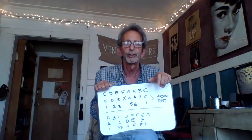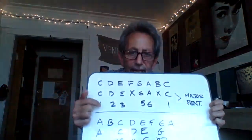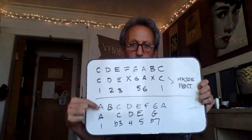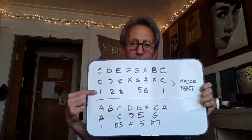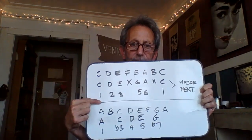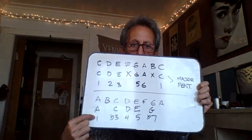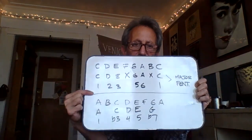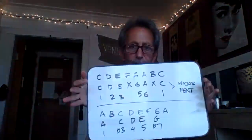One of the creative ideas I had was: since the formulas between the major pentatonic — 1, 2, 3, 5, 6 — and the minor pentatonic — 1, flat 3, 4, 5, flat 7 — are completely different, what if I applied the major pentatonic formula to the minor scale, and the minor pentatonic formula to the major?